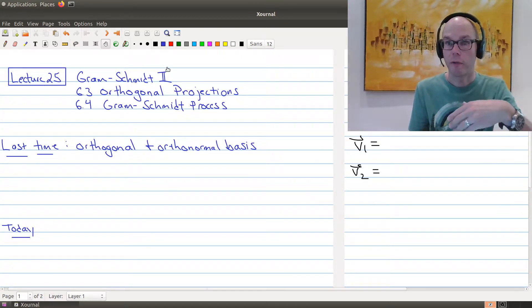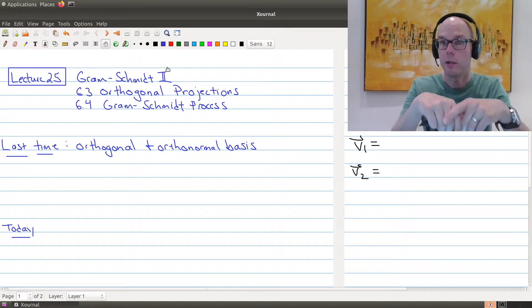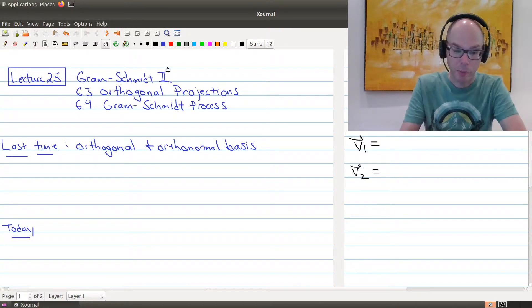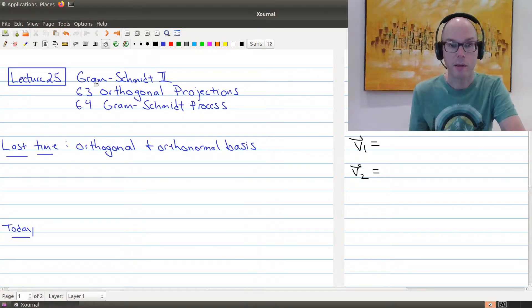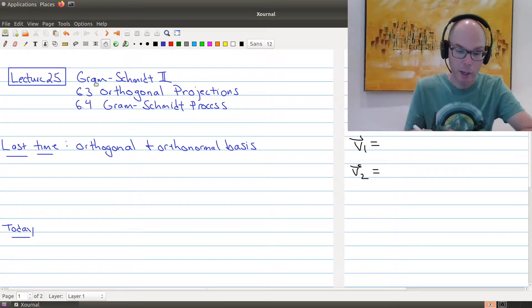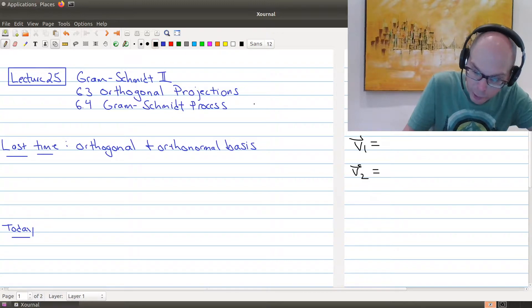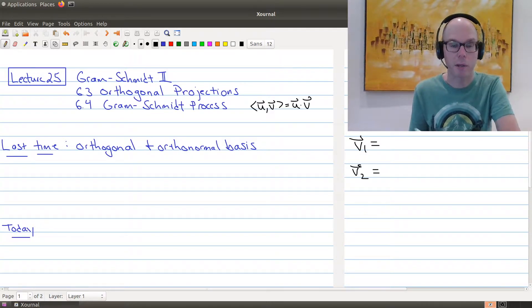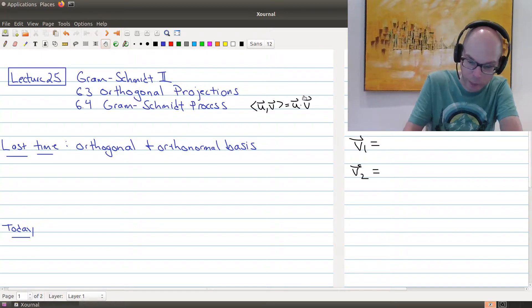So in lecture 24, we were actually setting up the framework and the tools that we would need in order to describe the Gram-Schmidt process. Today's lecture is based upon section 6.3 and 6.4 in the textbook. You should notice that when you go look at that section, they're talking about things about inner products. And whenever you see an inner product there in that book, just let me say that this is just going to be, in our case, the dot product of two vectors.